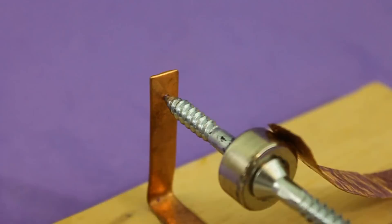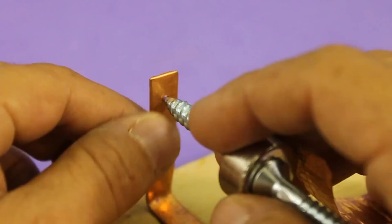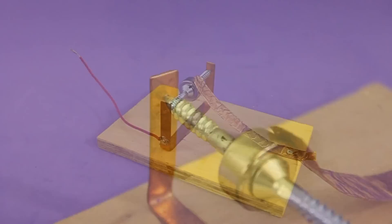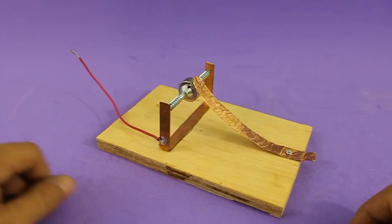The screws fit on this small hole that is perforated on the copper strip. We also have this copper tape that makes contact with the magnet.